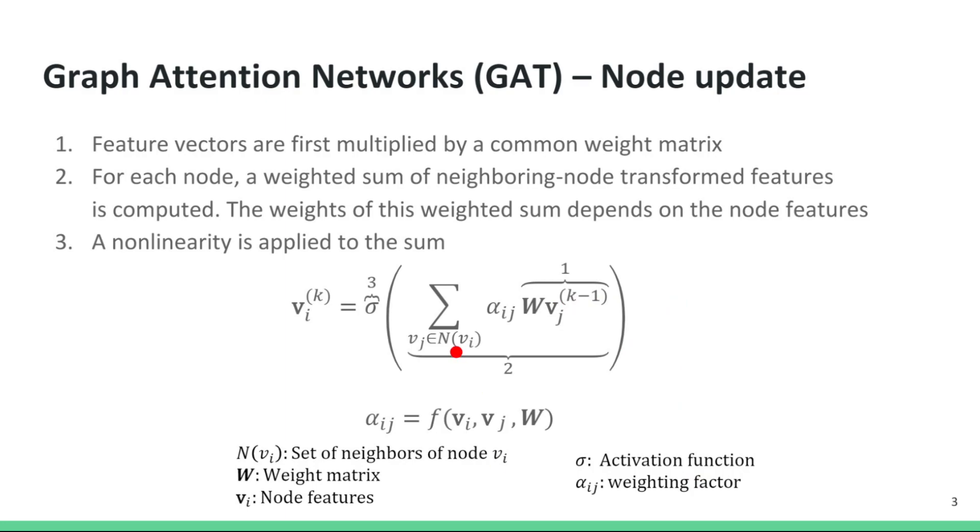Then we take an average of these messages. But instead of just taking a simple average, we take a weighted average, and the weights here are denoted by alpha_ij. So how do we compute the weights of this weighted average? This is the step that differentiates graph attention operators from other convolution-like operators on graphs. The weights are a function of the feature vectors, both of node i and the neighboring node j, as well as the weight matrix.